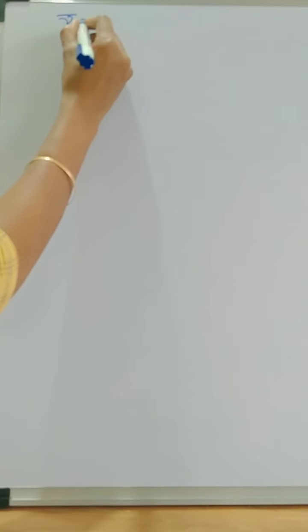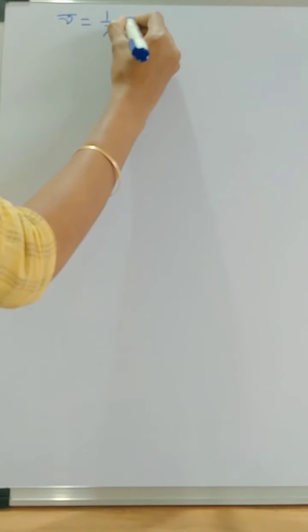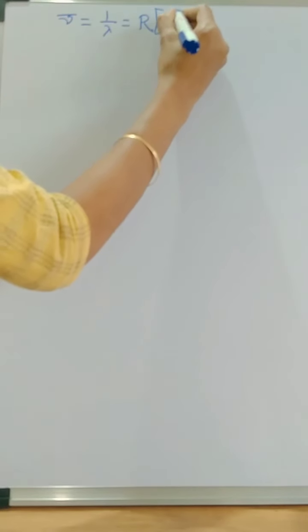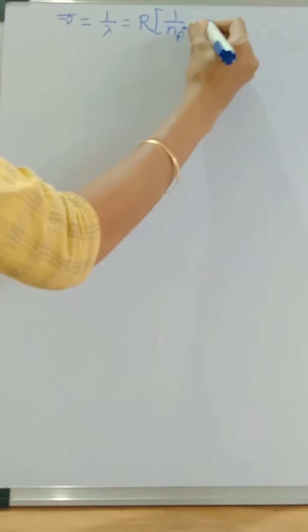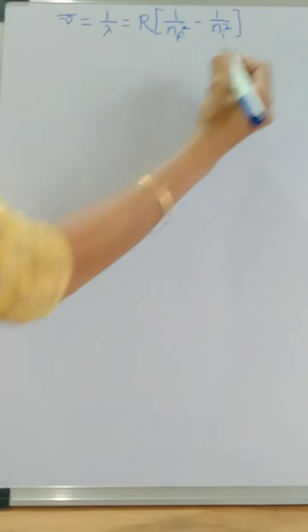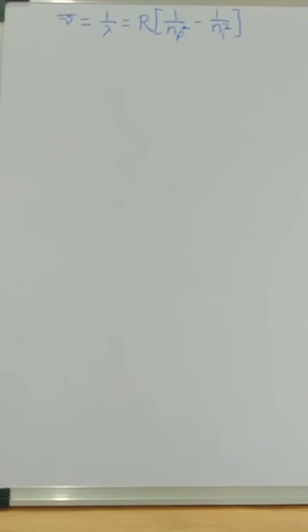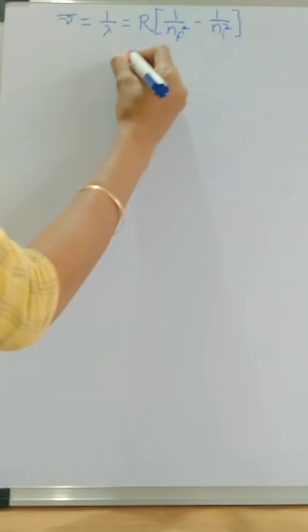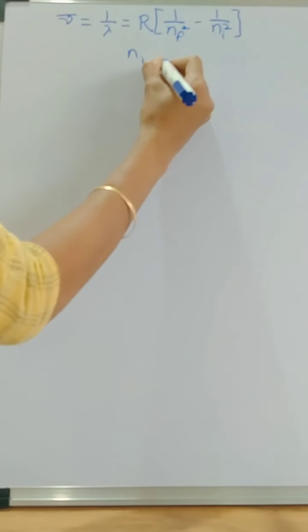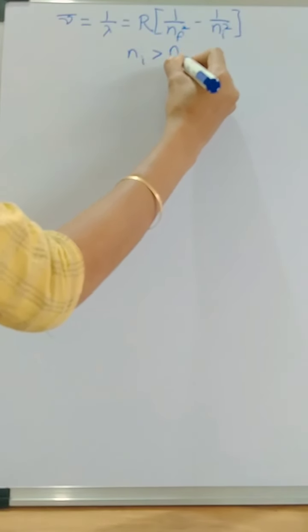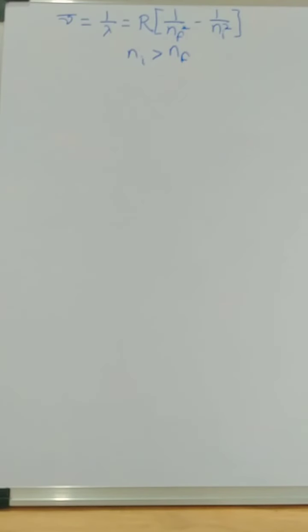Hello friends. In my last video we studied the origin of spectral lines, including Rydberg's constant and how to find the wavelength value. The wavelength value is denoted by nu-bar, which equals 1/λ = R × (1/nf² − 1/ni²), where ni and nf denote the transition of an electron from initial to final orbit, and the condition is that ni must be greater than nf. With this equation we can find the wavelength for different spectral series.